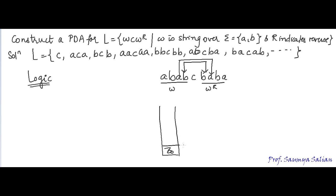Initially, my stack top is Z0. On reading A, I push A to the stack. On reading B, I push B to the stack. I push all symbols of W onto the stack. The moment I read C, I perform a skip operation. After reading C, whatever symbols I will be reading are symbols of W^R. The last symbol of W will be on top of the stack, which should match with the first symbol of W^R.